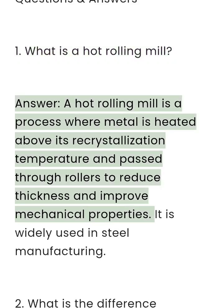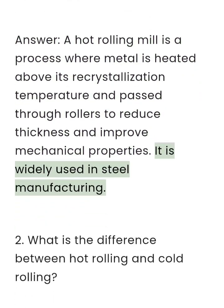A hot rolling mill is a process where metal is heated above its recrystallization temperature and passed through rollers to reduce thickness and improve mechanical properties. It is widely used in steel manufacturing.